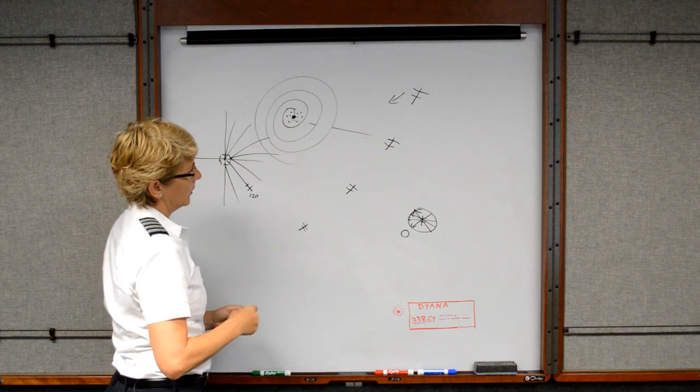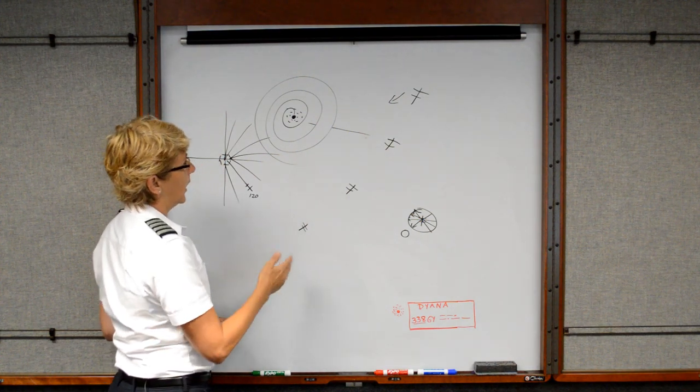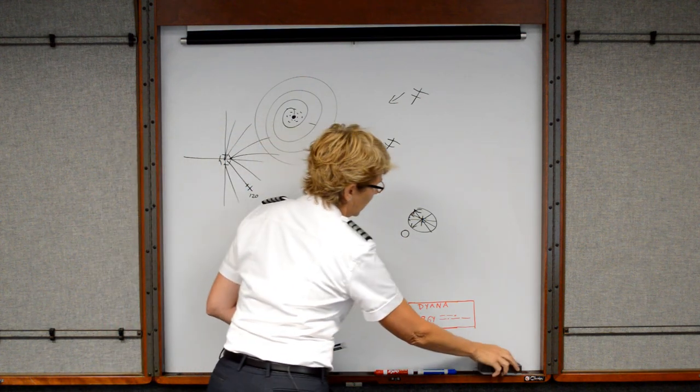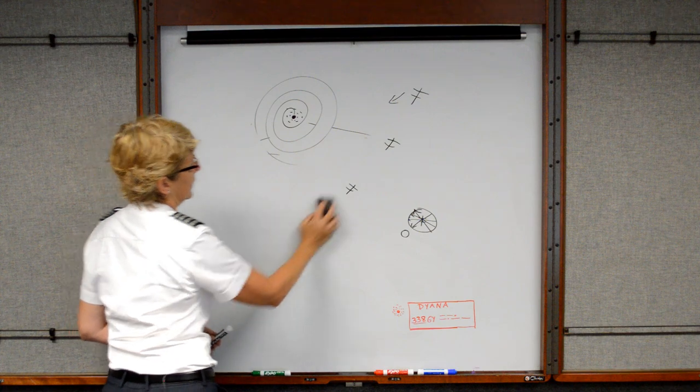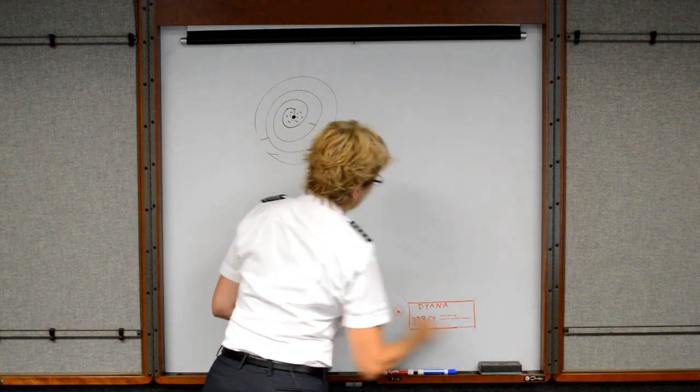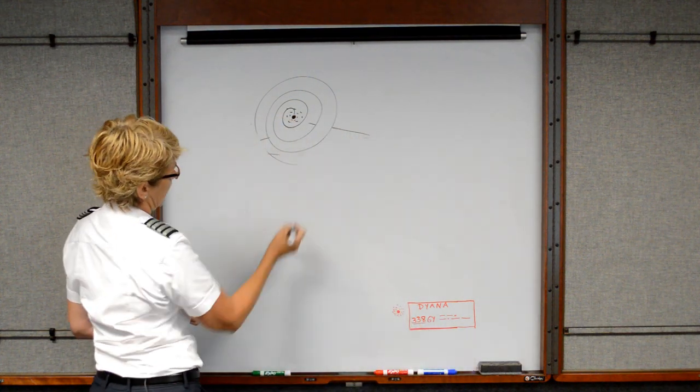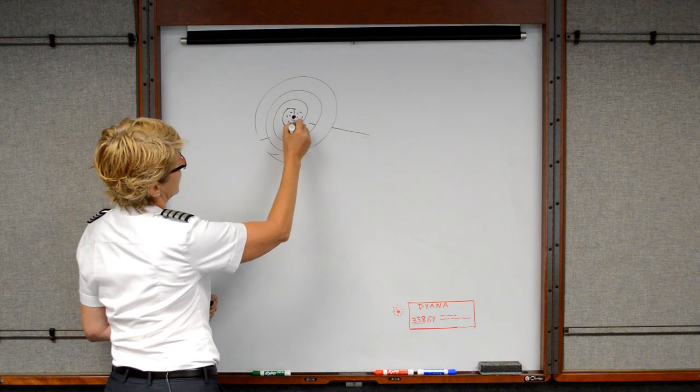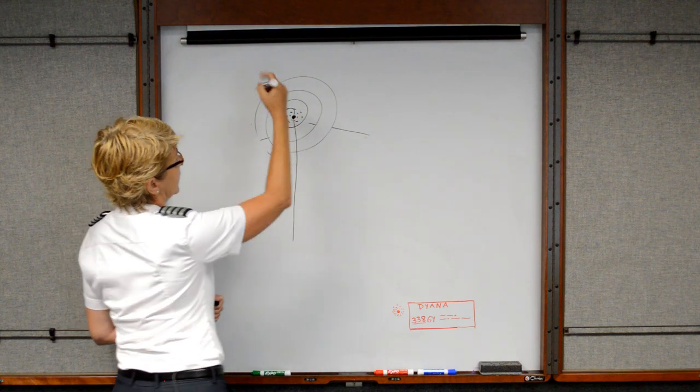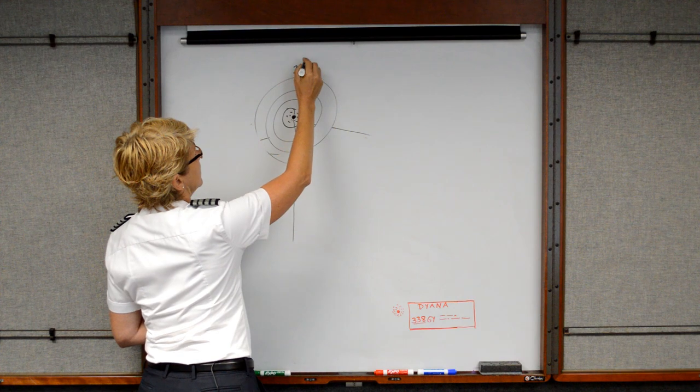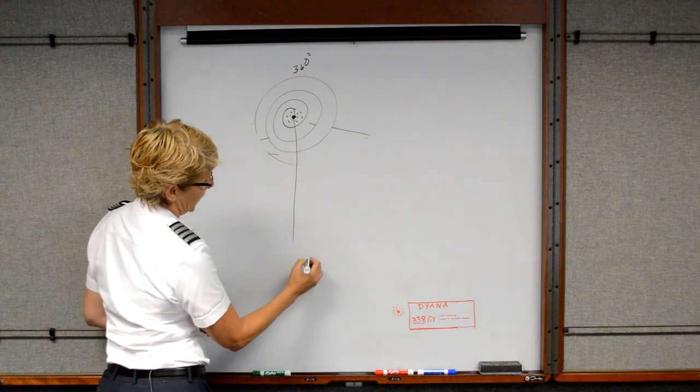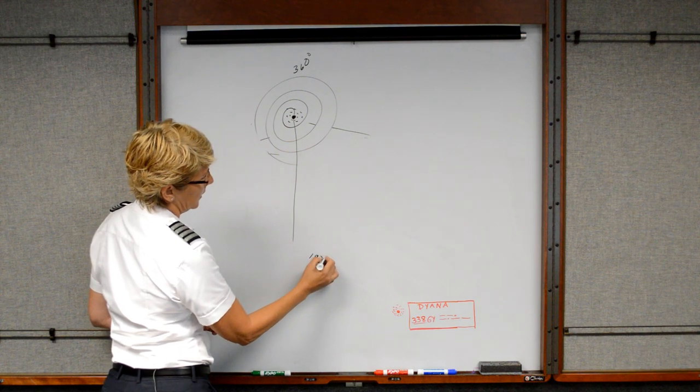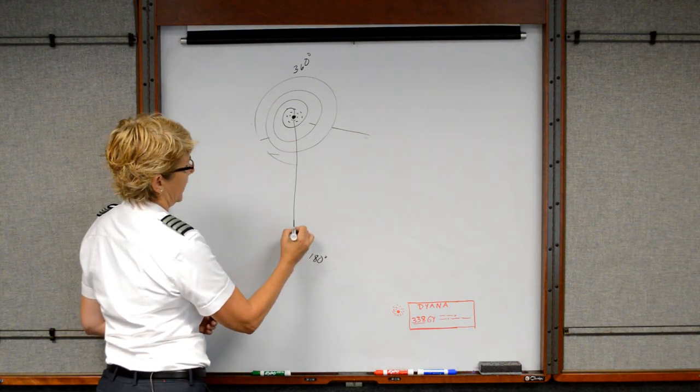So let's say that we wanted to fly directly to the station. How does that work? Well, there's something called homing, and there's something called tracking. So let's say that I was south of the station, and I wanted to fly inbound on the 360. So this direction, you're flying 360 degrees to the station, and then this bearing would be the 180 degree bearing from the station. And here's your airplane.